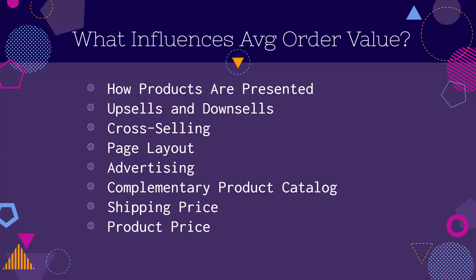That's why niche is always the way to go. If you have a niche store, your entire product catalog is complimentary. If you have a cat store, you could upsell, downsell, or cross-sell any product in your store. Other things like shipping price and product price affect your average order value too, but those are more or less tied to your product. This strategy can work with any product, any service, any niche, any type of store.